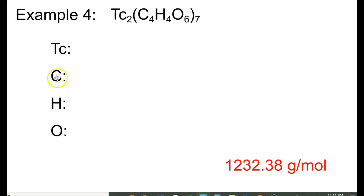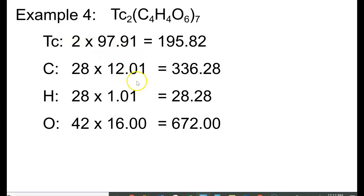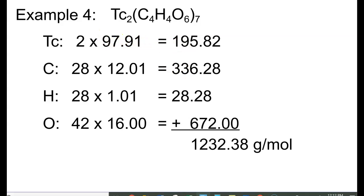Just like the other examples, you are going to list the elements that you have — T, C, H, and O. You're going to count how many you have: 2, 28, 28, 42. Remember the seven gets multiplied through. You're going to look up their numbers off the periodic table, then multiply for a subtotal — multiply the number you have times the molar mass, the periodic table number. Then get a grand total. And this is how you do that one.